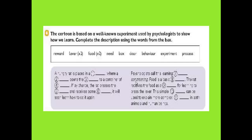Let's read the text. A hungry rat is placed in a box where a lever opens the door to a container of food. If by chance the rat presses the lever and receives some food, it will soon learn how to do it again.